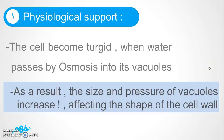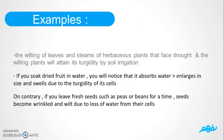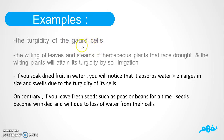We need examples. The turgidity of guard cells, which we studied before, is caused by turgor support. The simplest example is the wilting of leaves and stems of herbaceous plants that face drought — the wilting plant will regain its turgidity by soil irrigation.